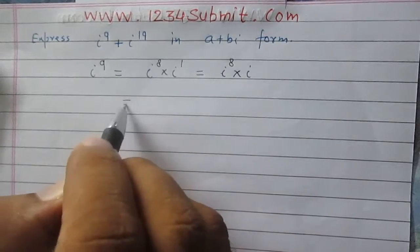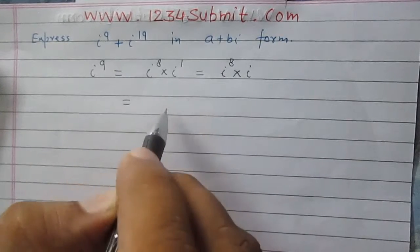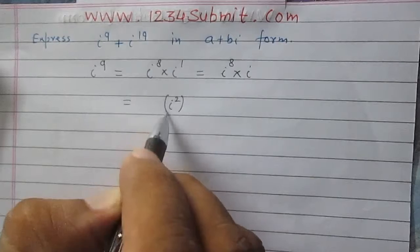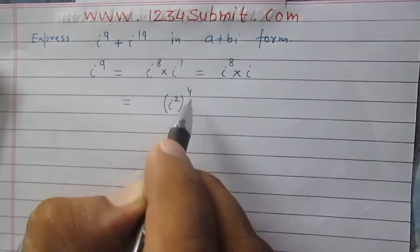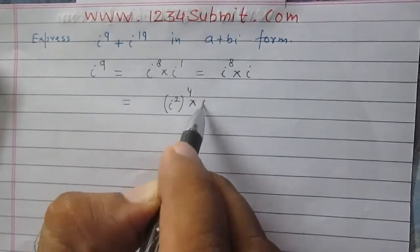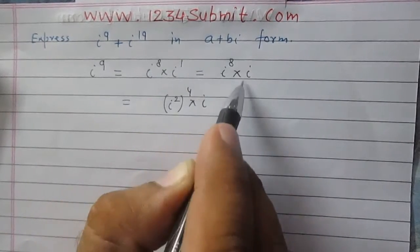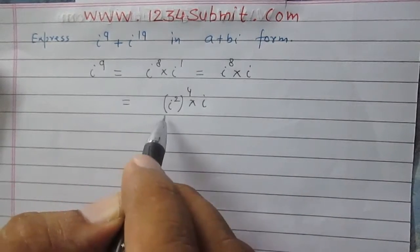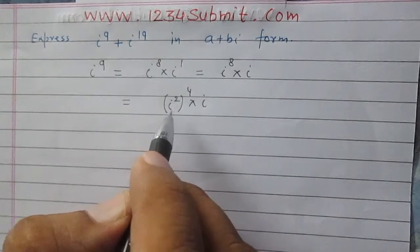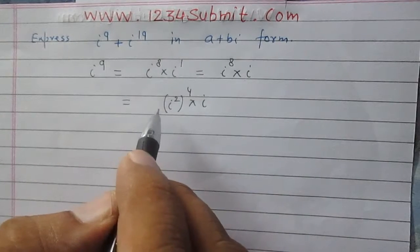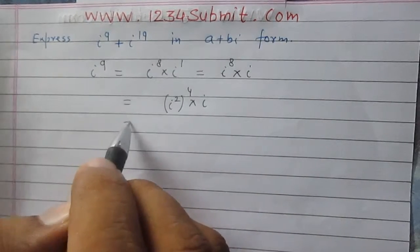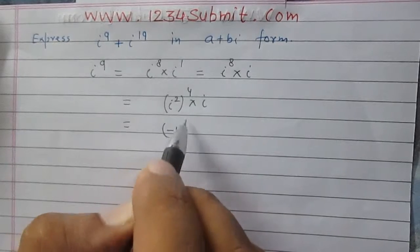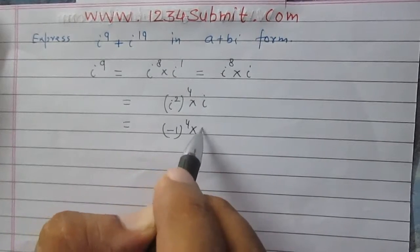Iota raised to power 8 can be written as iota square raised to power 4, and iota as it is. We know that iota square is minus 1, so it is minus 1 raised to power 4 into iota.